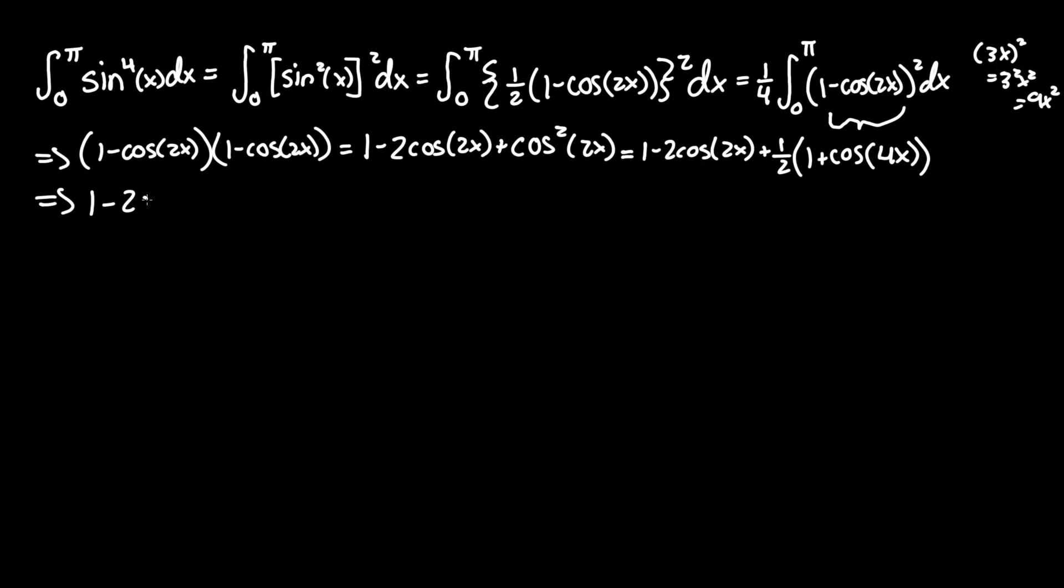We can still do a little bit of simplification. This becomes 1 minus 2 cosine 2x, plus one half, plus one half cosine 4x. And you can see that the 1 plus one half turns into three halves, minus 2 cosine 2x, plus one half cosine 4x. And let's put that back into the integral function.